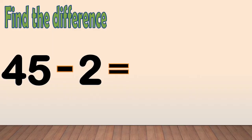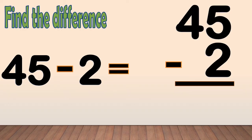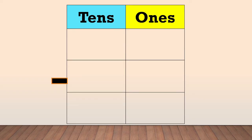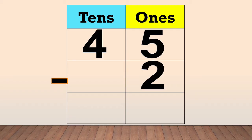Now, let's get started. Find the difference: 45 minus 2. First, arrange the numbers in columns. Place the digit of the number in a column based on its place value. 45 minus 2.